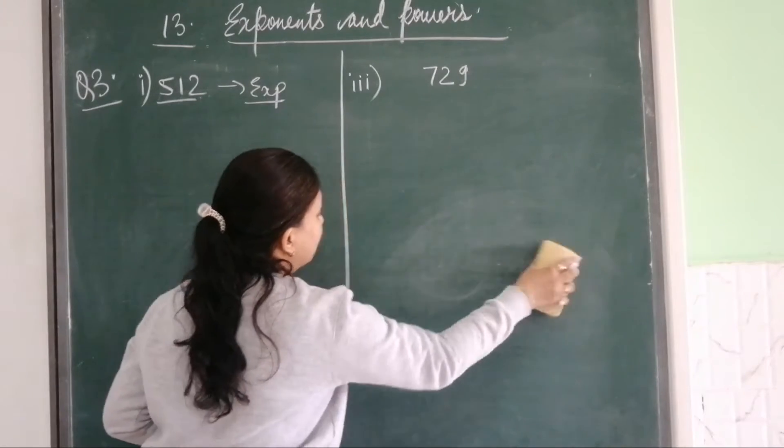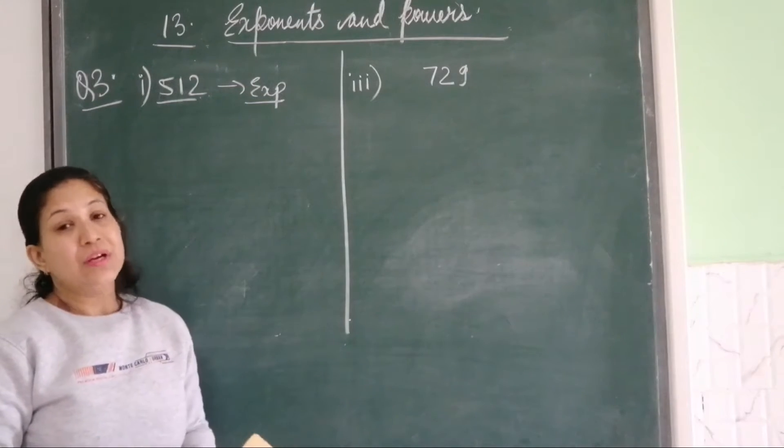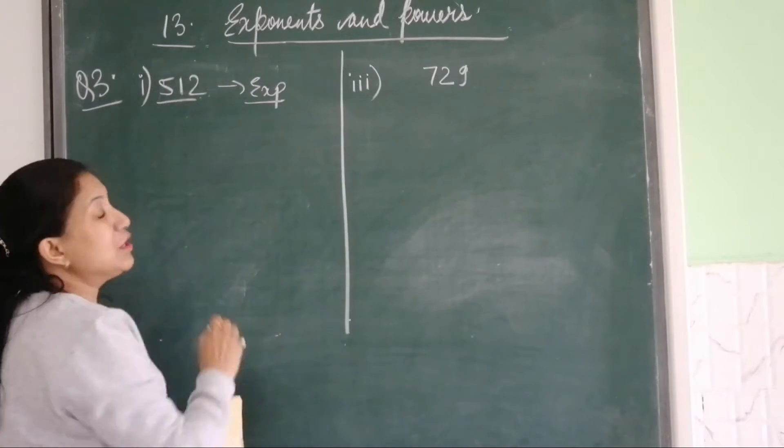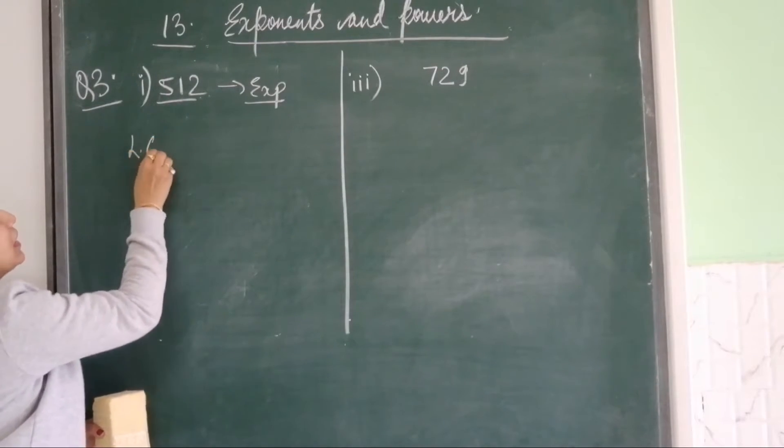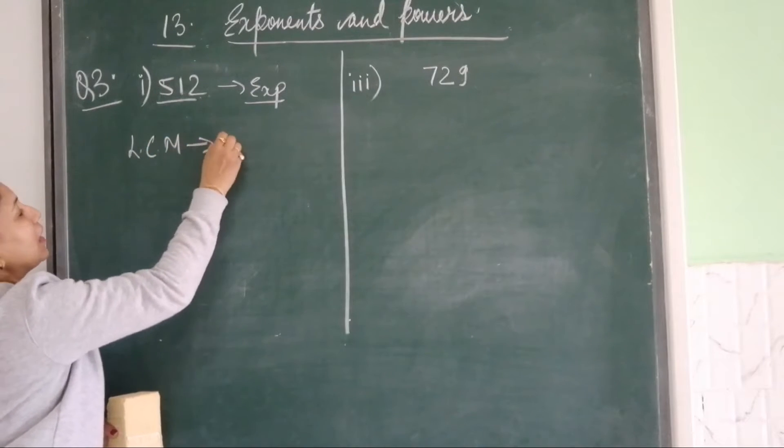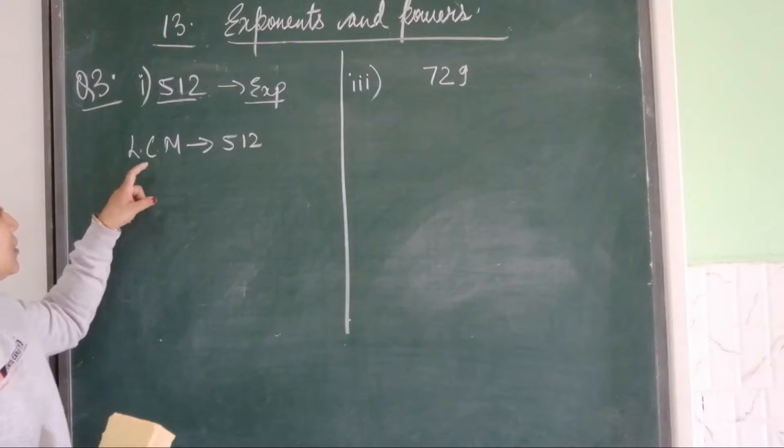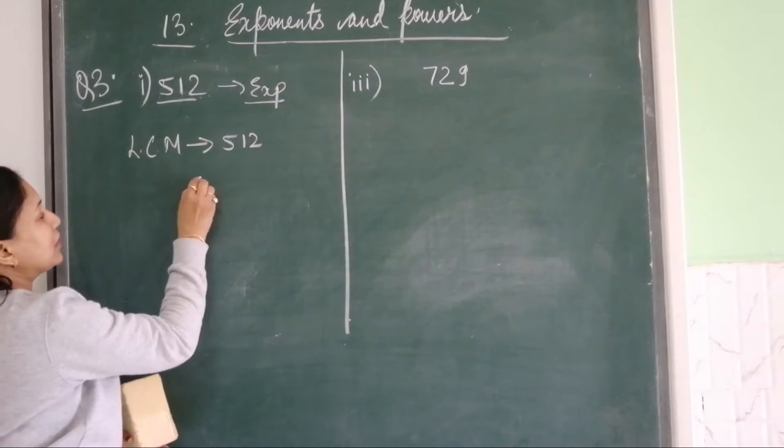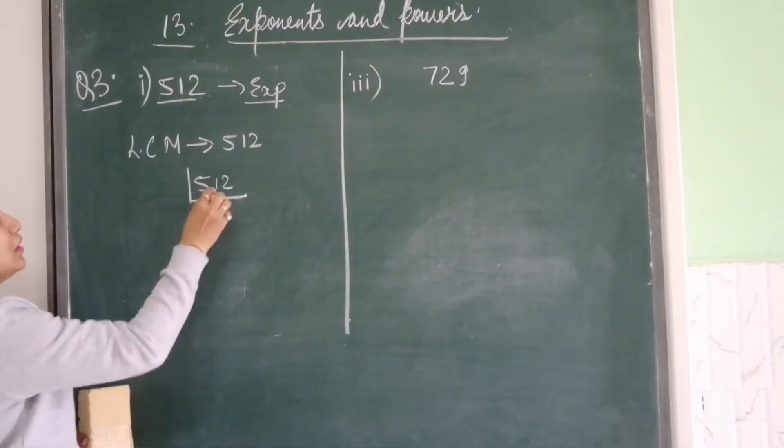Now, the question comes, when you see 512 and power, how will you express this in exponential form? Children, remember, when you have such questions, wherever it is asked to represent the numbers into exponential form, you will take LCM of that given number. You will take least common multiple of that number. You know how we take LCM? If you want to take LCM of 512, you will use prime factors.